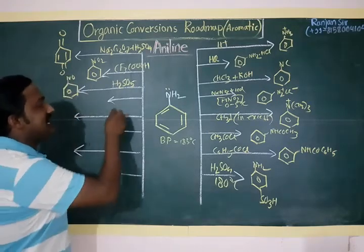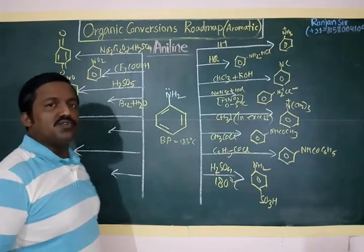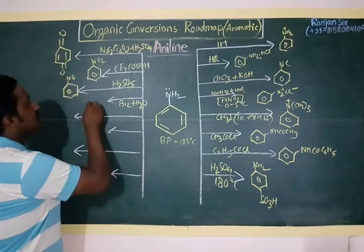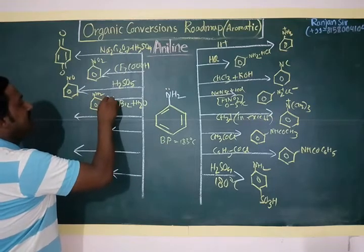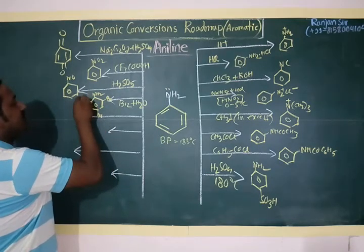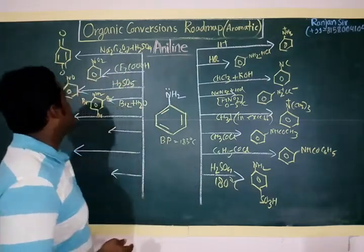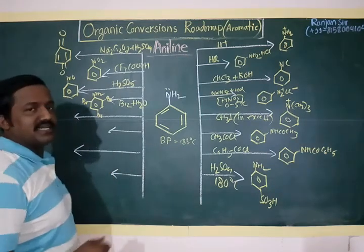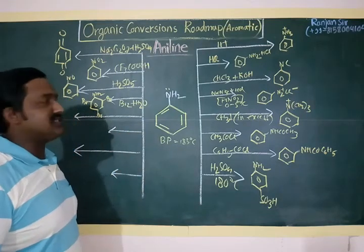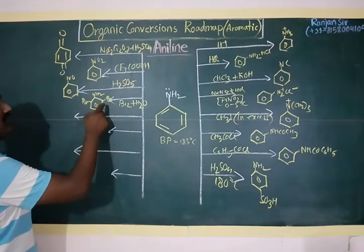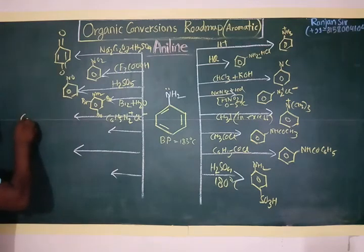Aniline reacting with bromine in the presence of water (aqueous medium) forms 2,4,6-tribromoaniline. This is a white crystalline solid compound, and this reaction is generally used as a distinctive test for the identification of aniline.